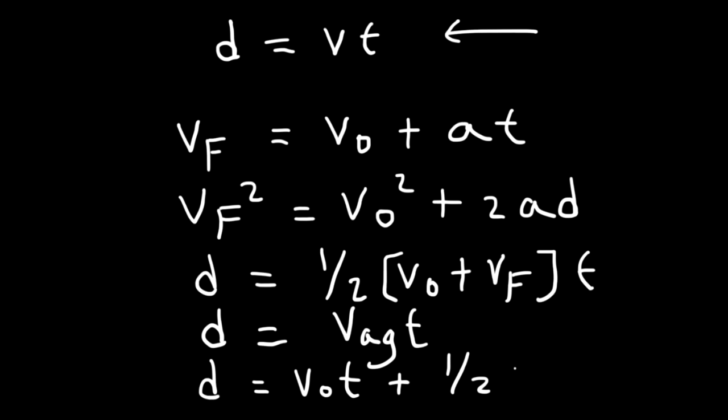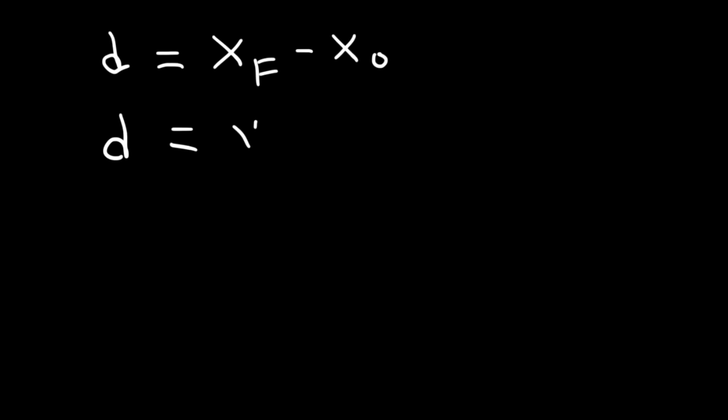What exactly is D? You can use D as displacement or distance. Distance and displacement are the same if an object moves in one direction and doesn't change direction. If it changes direction, they are not the same — but technically D is displacement, which is the final position minus the initial position. You can apply it in the x or y direction.